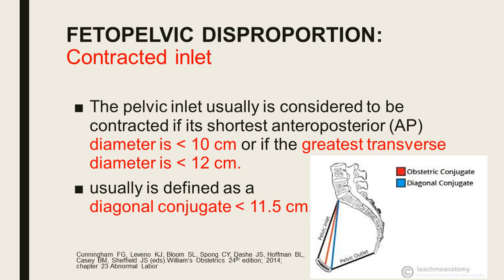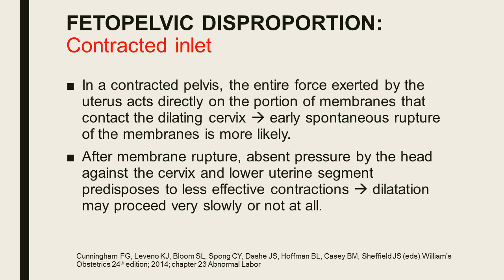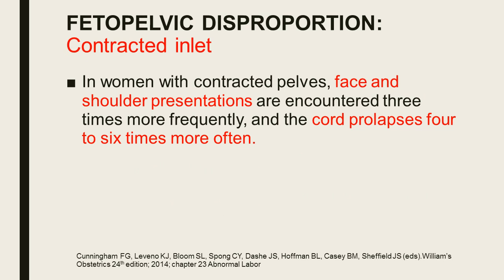The contracted inlet is diagnosed when the shortest anterior-posterior diameter is less than 10 cm or the greatest transverse diameter is less than 12 cm, but it is more convenient to diagnose when the diagonal conjugate is less than 11.5 cm. In a contracted pelvis, the entire uterine force acts on the membranes contacting the dilating cervix, making early spontaneous rupture of membranes more likely. After rupture, absent pressure by the head predisposes to less effective contractions. Face and shoulder presentations occur 3–4 times more frequently, and cord prolapse 4–6 times more often.